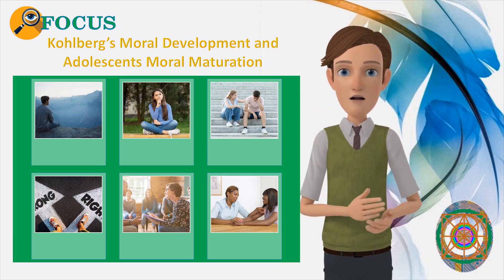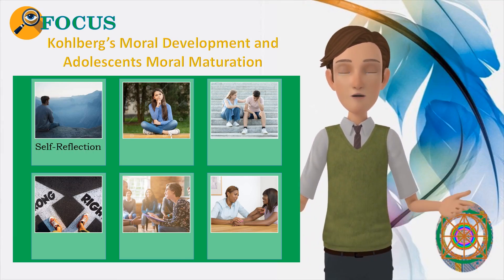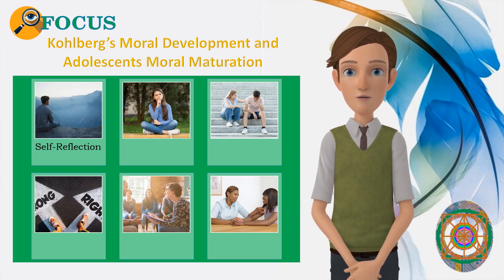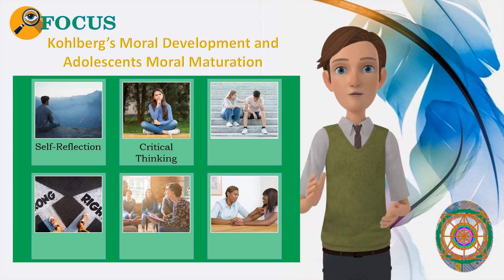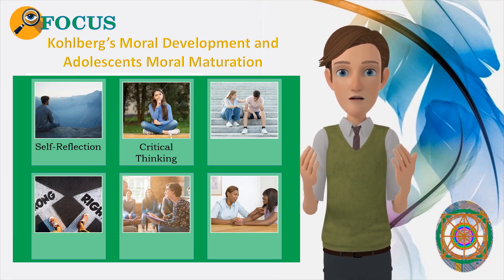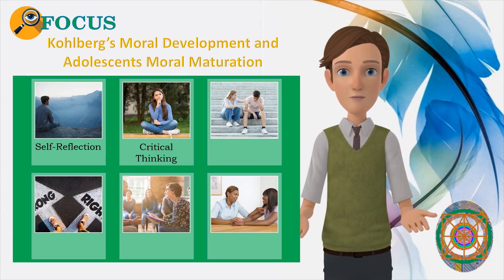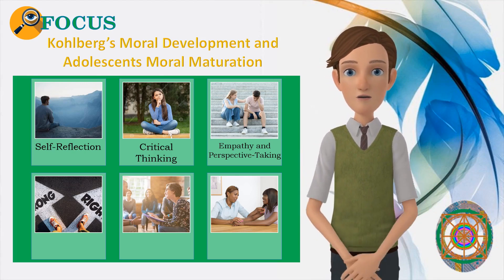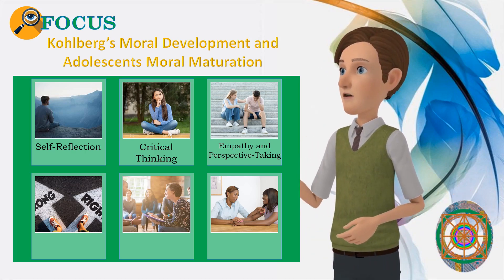For the adolescent, Kohlberg's theory of moral development can offer valuable guidance and support in your moral maturation journey. Self-reflection: Kohlberg's theory encourages you to reflect on your own moral beliefs, values, and decision-making processes. By understanding the stages of moral development, you can assess where you currently stand in your moral reasoning journey and identify areas for growth. Critical thinking: Kohlberg's theory emphasizes the importance of critical thinking in moral decision-making. By engaging in moral dilemmas and hypothetical scenarios, you can practice analyzing situations from multiple perspectives, considering the consequences of your actions, and evaluating the ethical principles involved. Empathy and perspective-taking: Kohlberg's theory highlights the role of empathy and perspective-taking in moral development. By putting yourself in the shoes of others and considering their viewpoints and experiences, you can deepen your understanding of moral issues and develop a greater sense of compassion and empathy towards others.